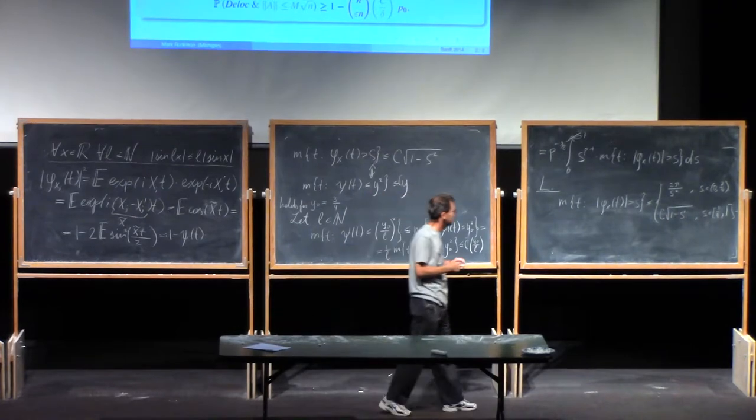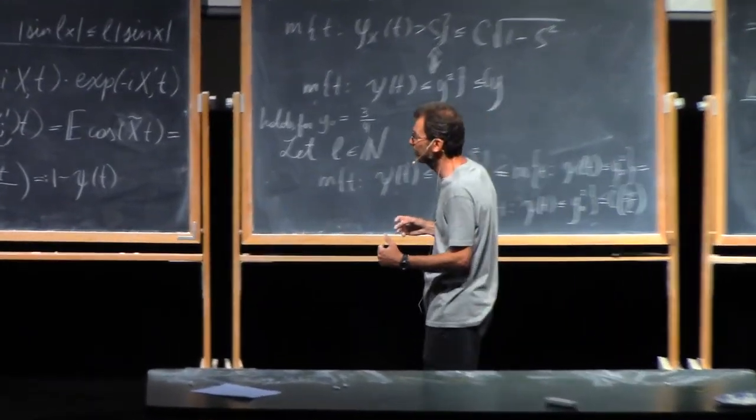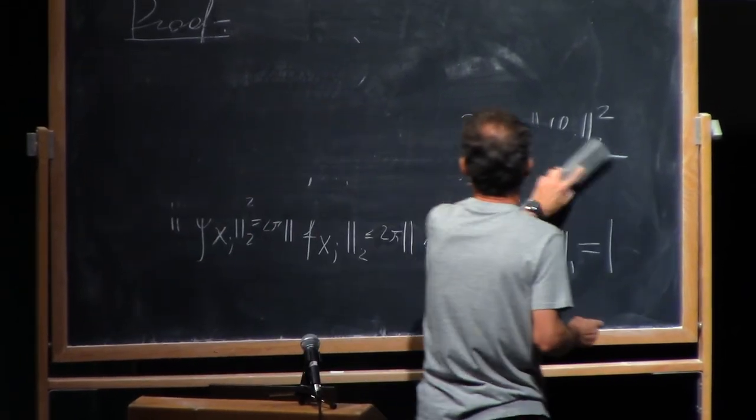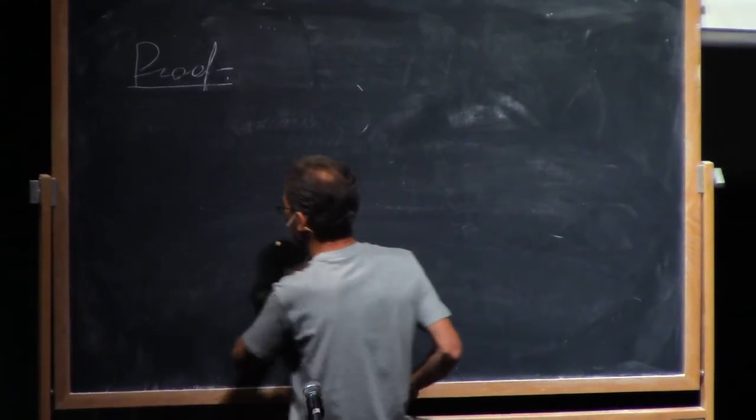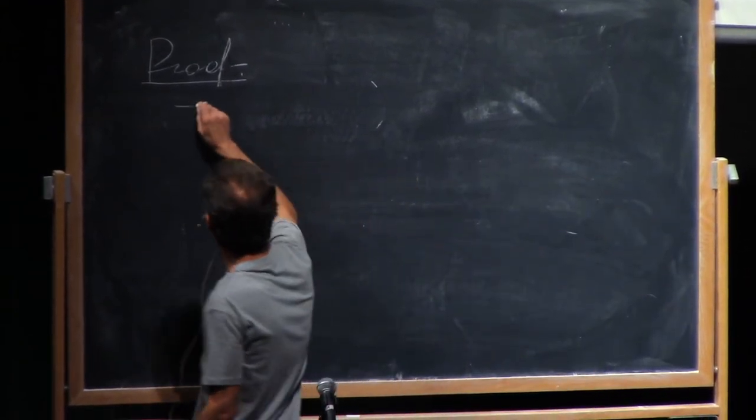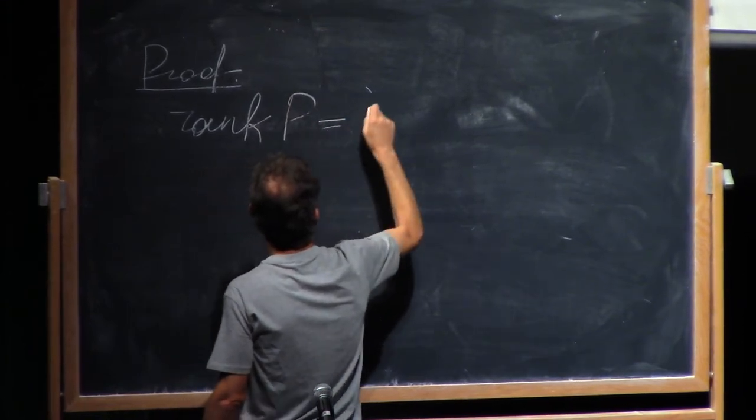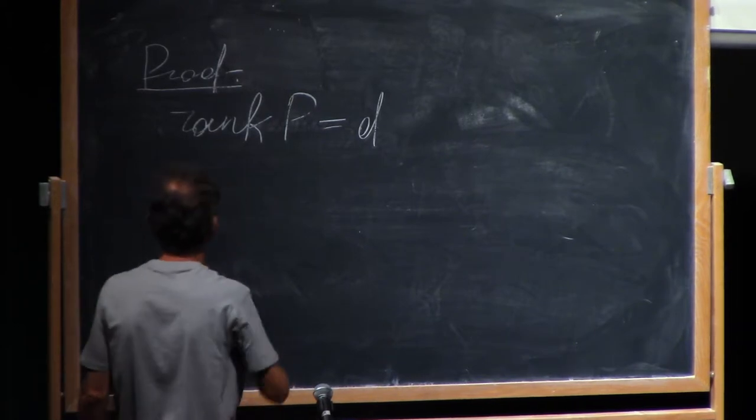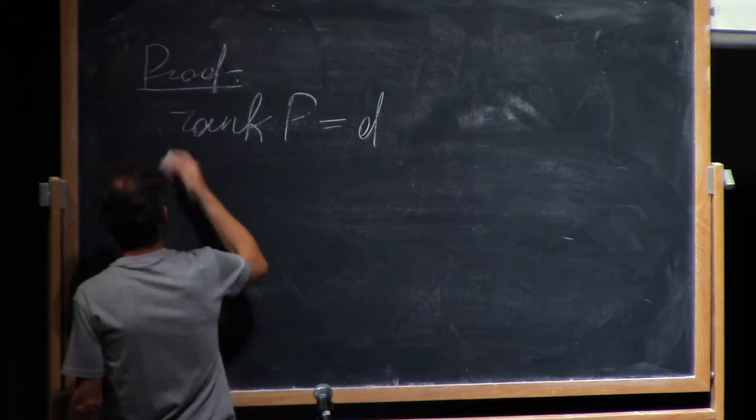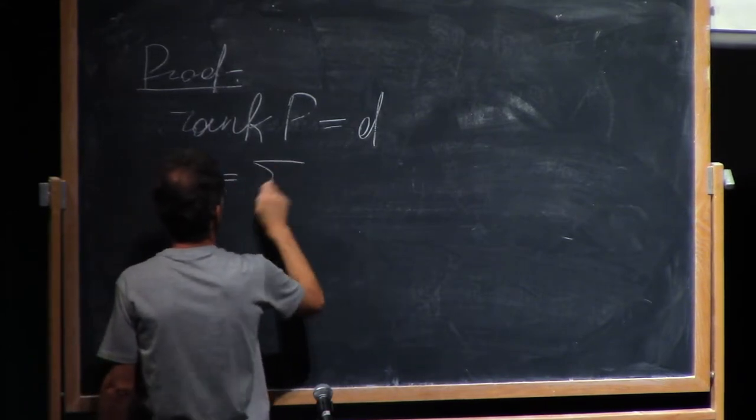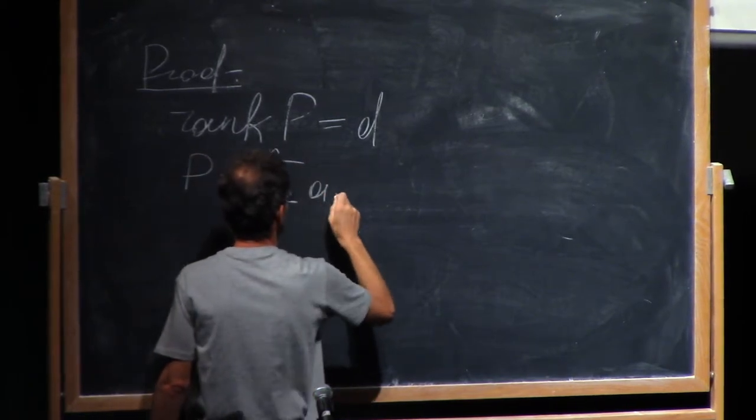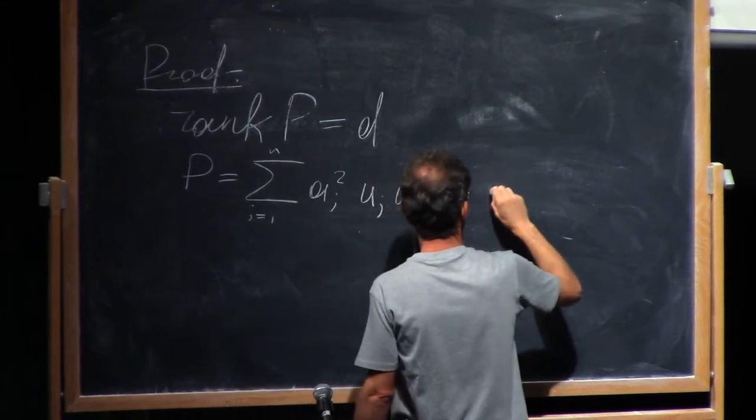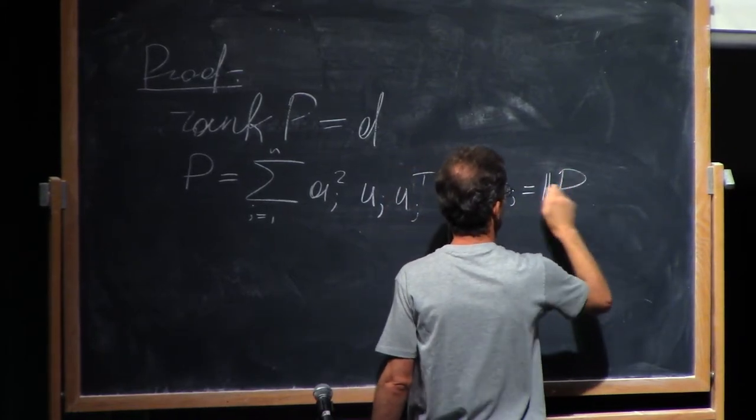What about multi-dimensional case? Again, it splits into two parts, so let me consider the multi-dimensional case, rank P equals D. And for the multi-dimensional case, I have that the projection P can be written as the sum j from 1 to n, aj squared uj uj transposed, where aj is the norm of P ej, and uj is the vector P ej normalized.